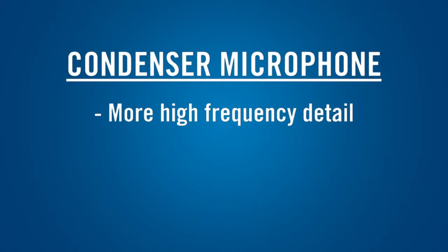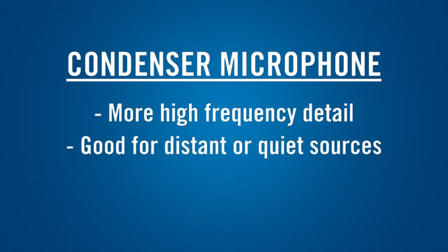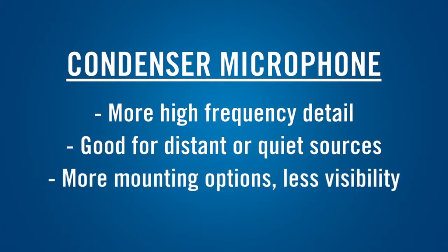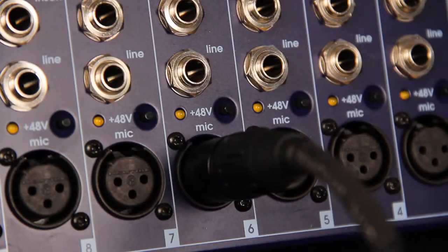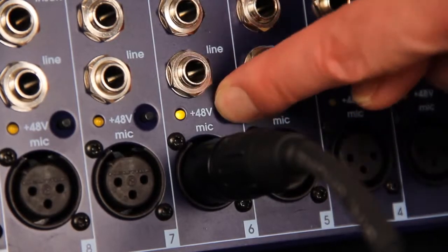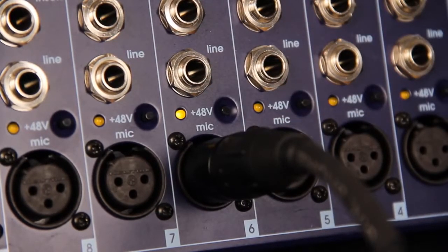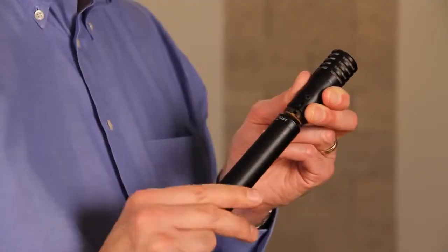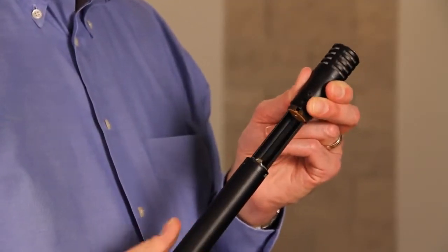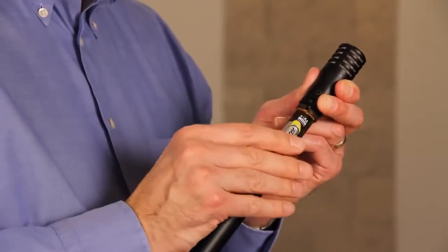Condenser mics usually have higher output than dynamics, so they're good for distant or quiet sources. Since there's no magnet in a condenser mic, they can be made extremely small, which makes it easier to mount them in tight spots and make the mic less visible. Condenser microphones have internal circuitry that requires power to operate. Usually, phantom power is supplied through the microphone cable from the mixer or recorder, though some condenser microphones can run on an internal battery.